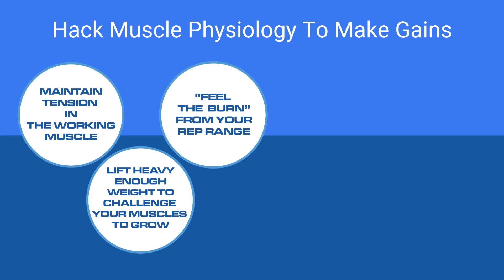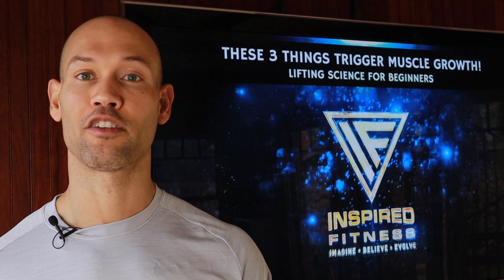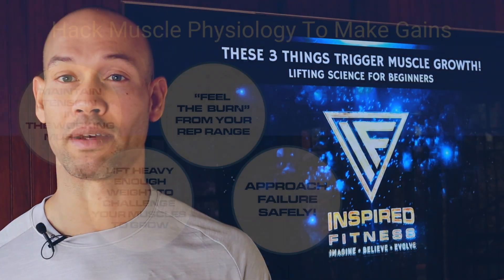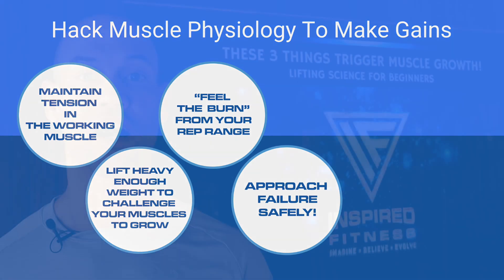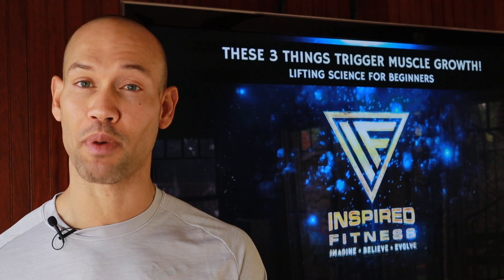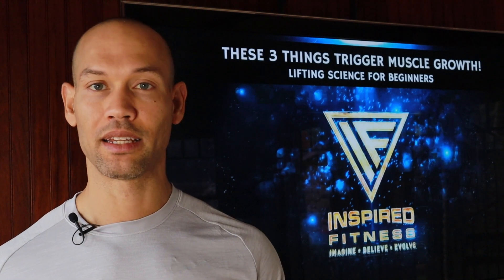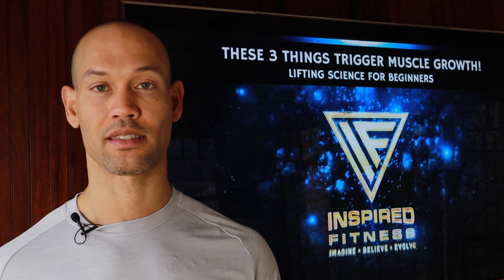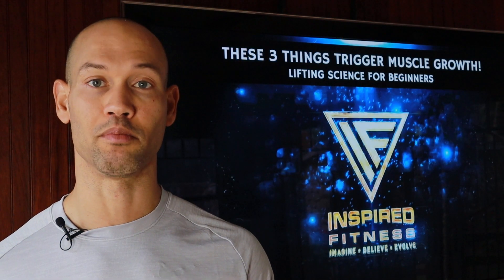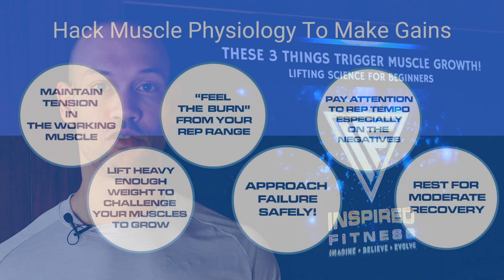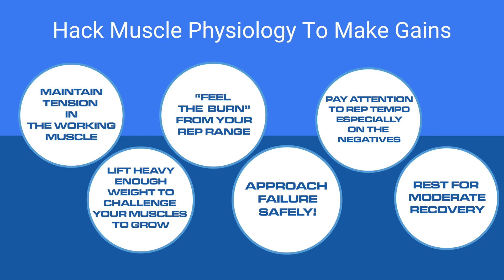Number three: maintain a rep range on your exercises that will allow you to feel the burn — that's a buildup of lactic acid within your muscle tissue, giving you a sense that you are stressing your muscles metabolically. Number four: occasionally and safely approach muscle failure, particularly on the concentric phase of your movements — and if you have a spotter, go for eccentric failure as well. Number five: be deliberate and not necessarily explosive with your exercises; maintain a rep tempo that allows for significant time under tension, and pay particular attention to the pace of the eccentric portion of each movement, as this has been shown to have a greater effect on muscle hypertrophy. Finally, rest between each of your sets so that you're mostly recovered but not entirely recovered before you perform the next set of each exercise.